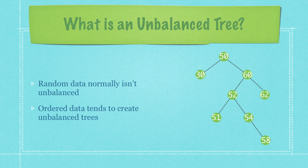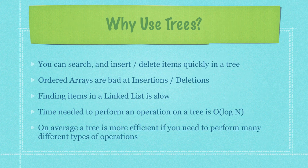So what is an unbalanced tree? Normally, random data isn't going to create an unbalanced tree, which is basically a tree in which most of the nodes are found on one side of the root. Ordered data, however, can and normally does create unbalanced trees. And unbalanced trees are bad because they are slow.